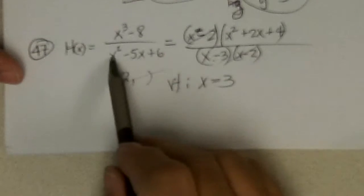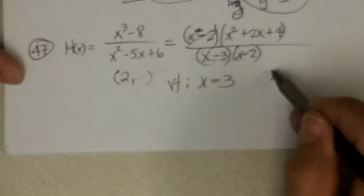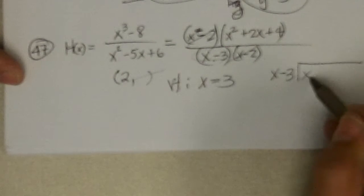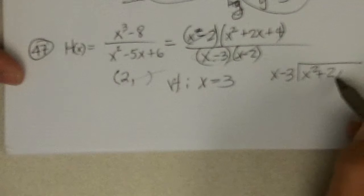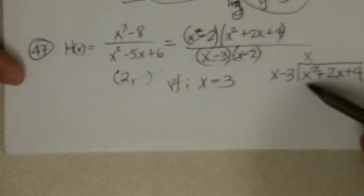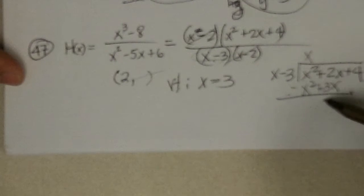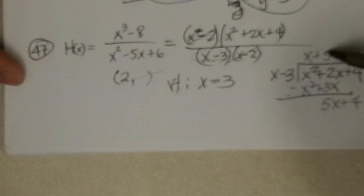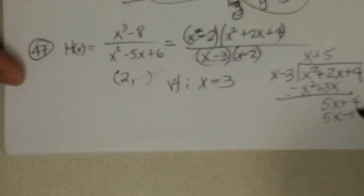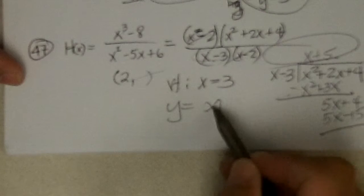And oblique, we would divide this into that, but now we can just divide x minus 3 into x squared plus 2x plus 4. So that would be x times x is x squared, x times negative 3 is negative 3x. Draw the line, change the signs, add, we get 5x plus 4, x times 5 would make 5x. And we don't have to go further, the oblique asymptote is y equals x plus 5.